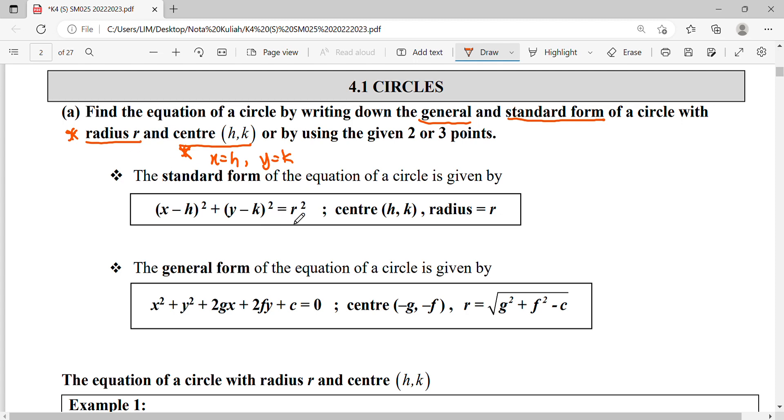That will be your center form. Of course from this equation when we want to read, we can read directly this is x equals to h, this is y equals to k. So h and k is our center, and then we know this value at the right hand side, after we square root we will get radius.